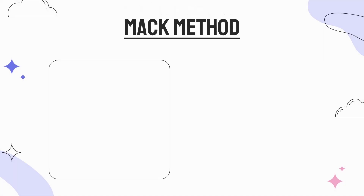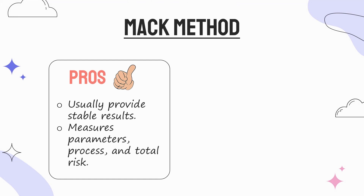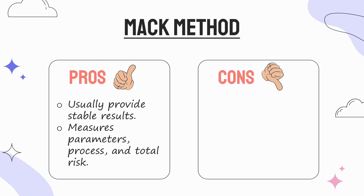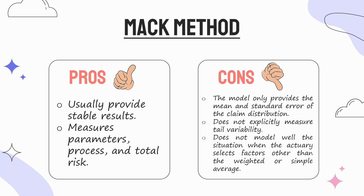The pros of the MAC method are that it usually provides stable results and measures parameter, process, and total risk. The cons are that the MAC method model only provides the mean and standard error of the claim distribution, does not explicitly measure tail variability, and does not model well the situation when the actuary selects factors other than the weighted or simple average.